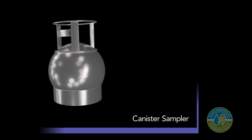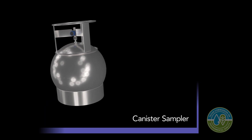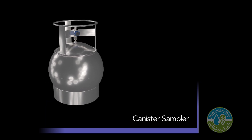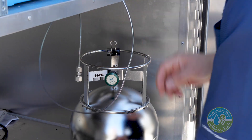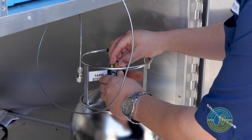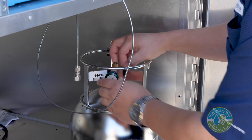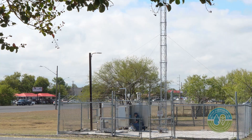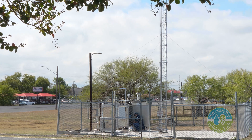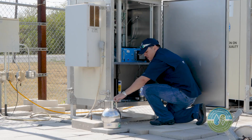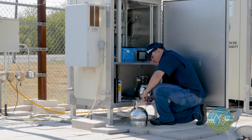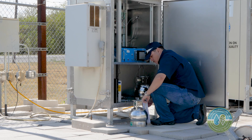A canister sampler is a non-continuous instrument that collects a 24-hour sample that's collected by our operators and then sent back to the air lab at TCEQ for analysis. They analyze it for 84 volatile organic compounds.